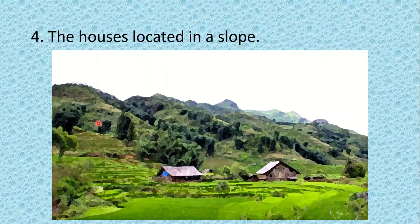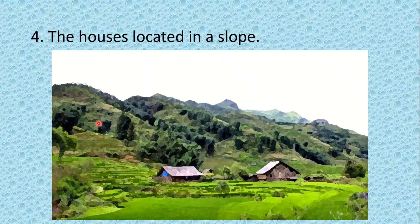The next one: the house located on a slope. Some people have to live on slopes. Especially those who live in mountainous areas have to build their houses on slopes. Sometimes they may have to face disasters like landslides.